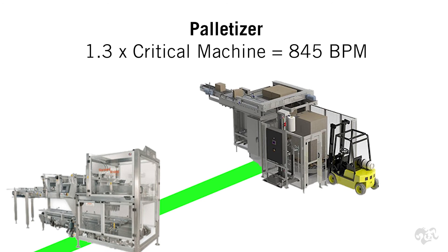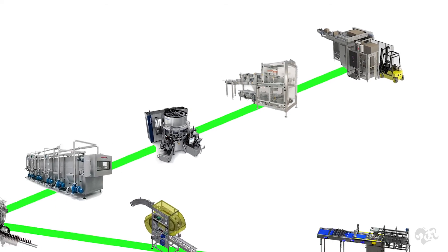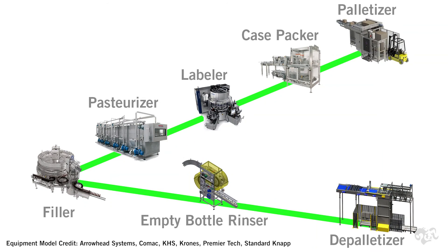What this gives you the ability to do is set up accumulators between these machines, so that if a downstream machine goes down, we accumulate the containers and then absorb that accumulation back into the line as quickly as possible — again, keeping that filler running 100% of the time if we can.